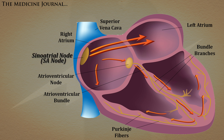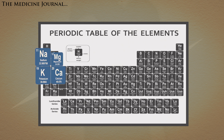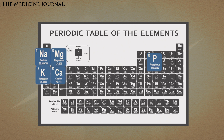These cells within the SA node, sometimes called the pacemaker of the heart, contain electrolytes both inside and outside of the cells. The most common electrolytes within the body are sodium, potassium, calcium, magnesium, phosphorus, and chloride.